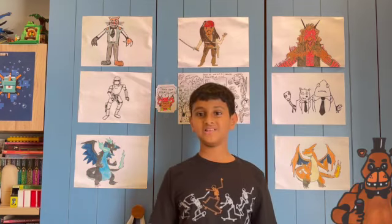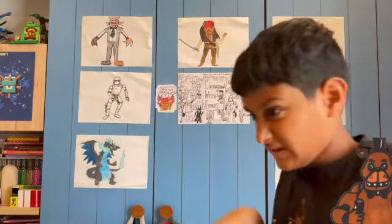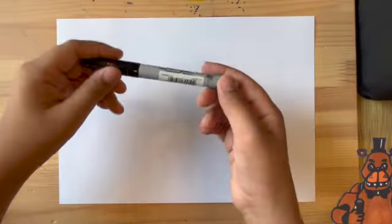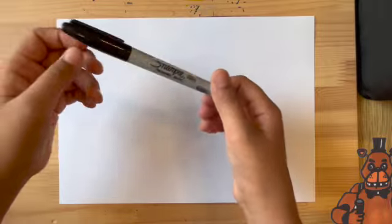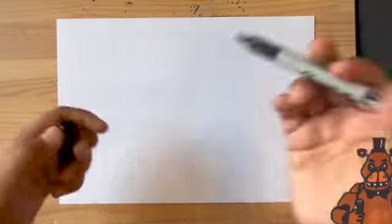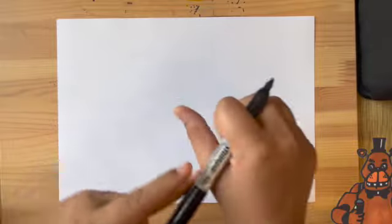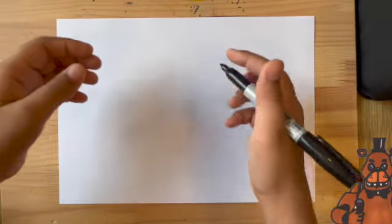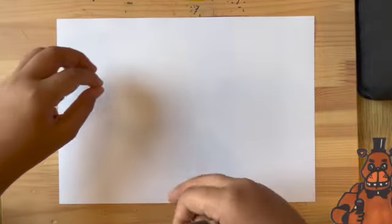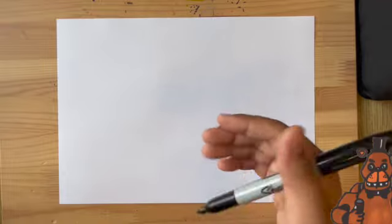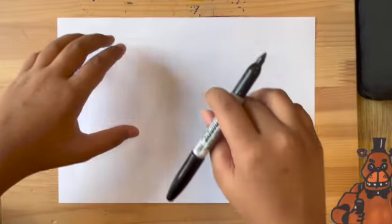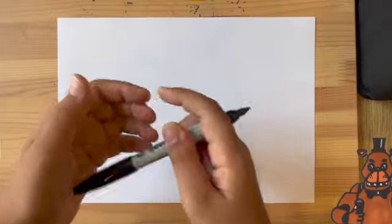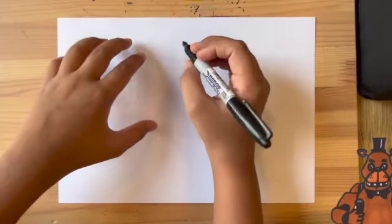So we're gonna be drawing the main character from that game, Freddy Fazbear. I'll see you in a second. Okay guys, so now we're gonna start drawing Freddy Fazbear. I'm gonna be using a Sharpie marker, but you can use whatever you want. Freddy Fazbear is actually a very interesting character - he's kind of like a bear of course, standing on his two legs, and they're actually called animatronics from Five Nights at Freddy's. They're like robot animals.